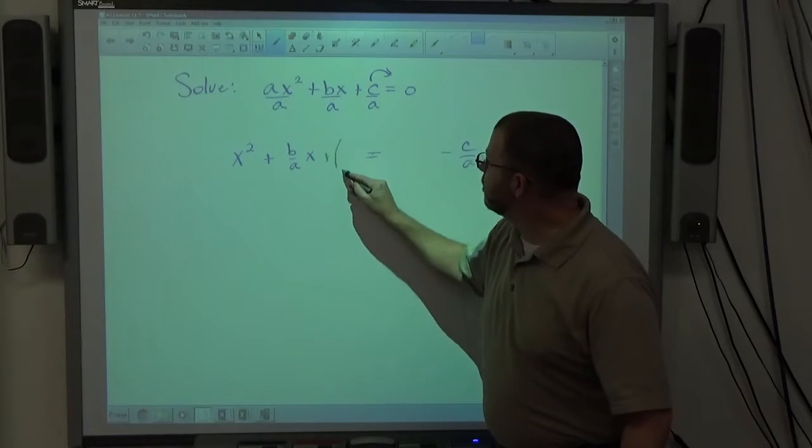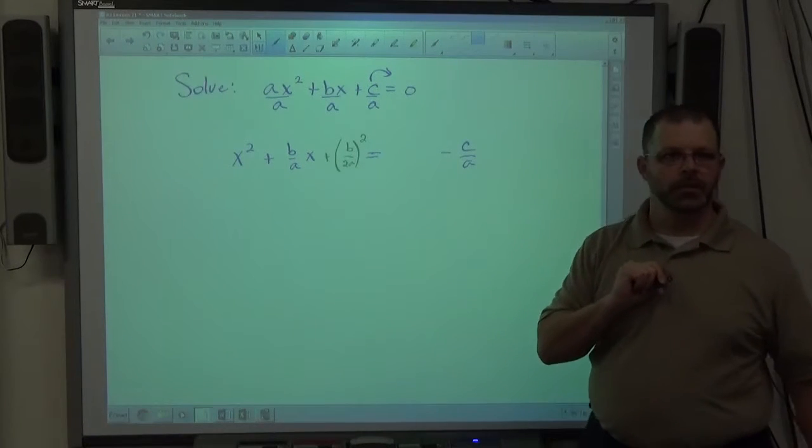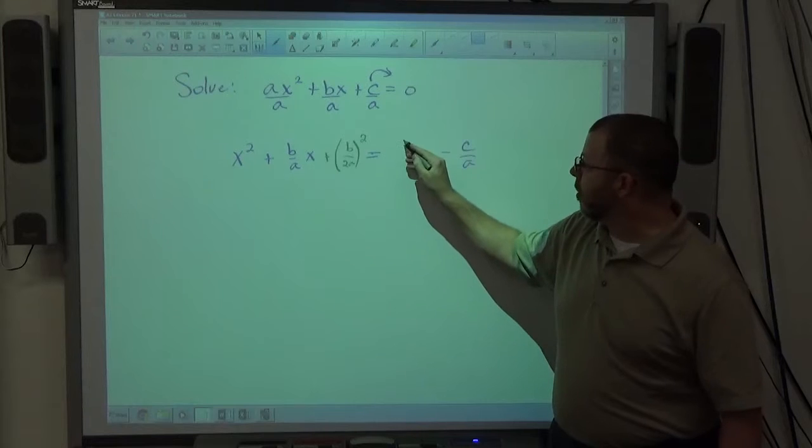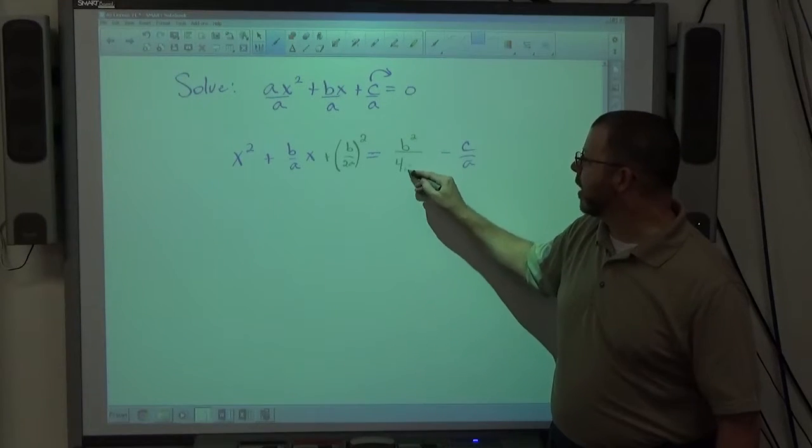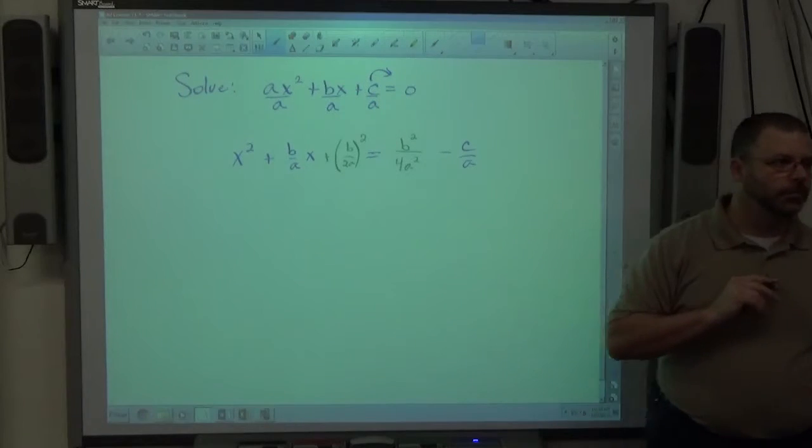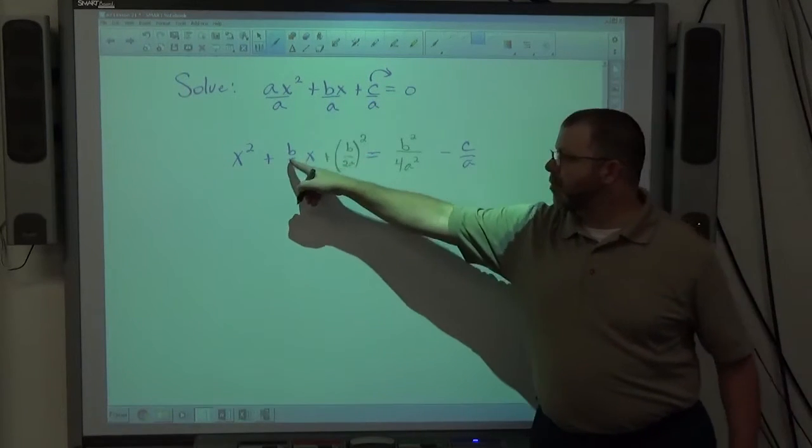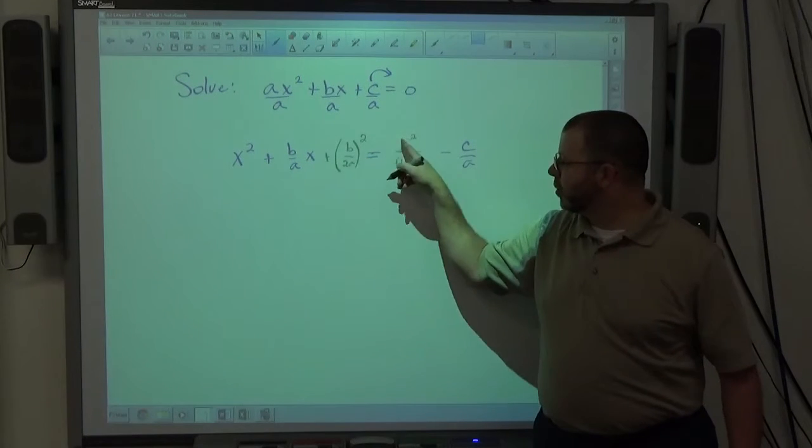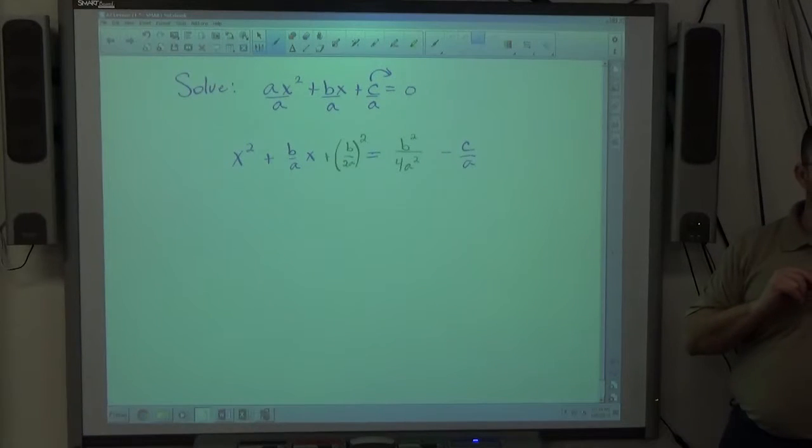So we're going to double the bottom here. I'm going to do plus b over 2a squared. And on this side I'm actually going to square it. So on top b to the second power, on the bottom 2 to the second power, and a to the second power. So I simply square everything. b over 2a is half of b over a, again double the bottom, squared, b squared, 2 squared, a squared.